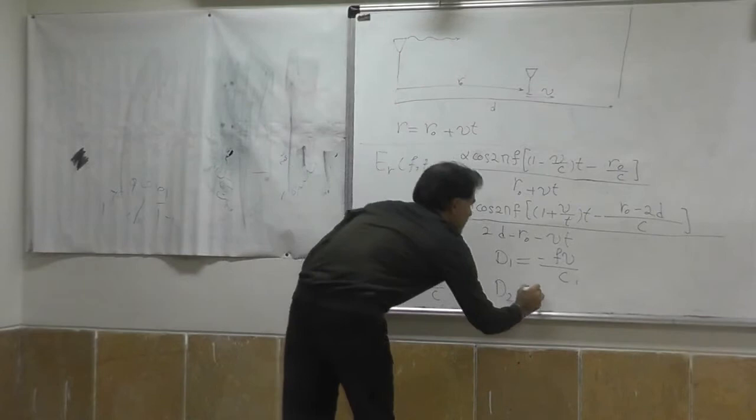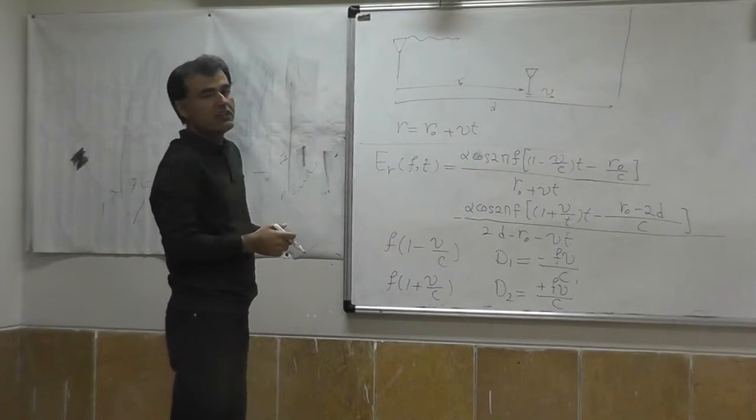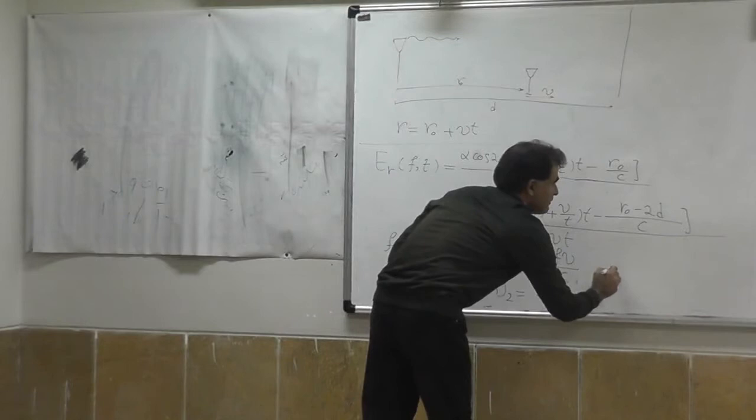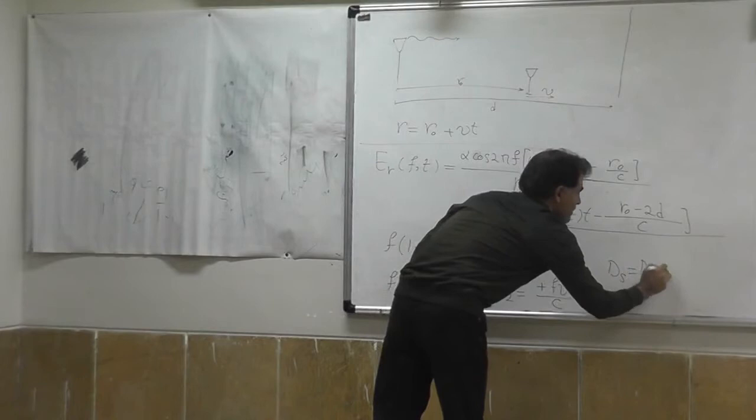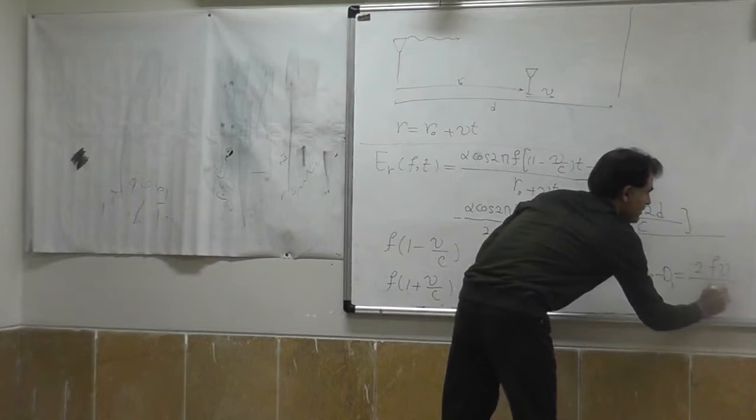The difference between these two Doppler shifts is called the Doppler spread. The Doppler spread is 2FV/c, accounting for both the direct and reflected path frequency shifts.